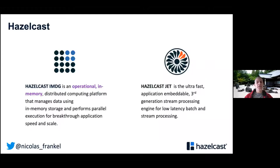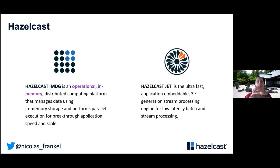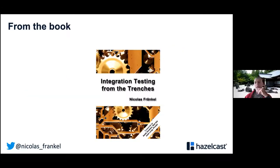Right now I work for a company called Hazelcast. We are known as a caching company, but the in-memory data grid is a bit larger than that. Hazelcast IMDG offers distributed data structures — in general it's a map used for caching — with replication or sharding distributed over the network. We also have Hazelcast Jet, which is about stream processing, also in memory, leveraging Hazelcast IMDG.